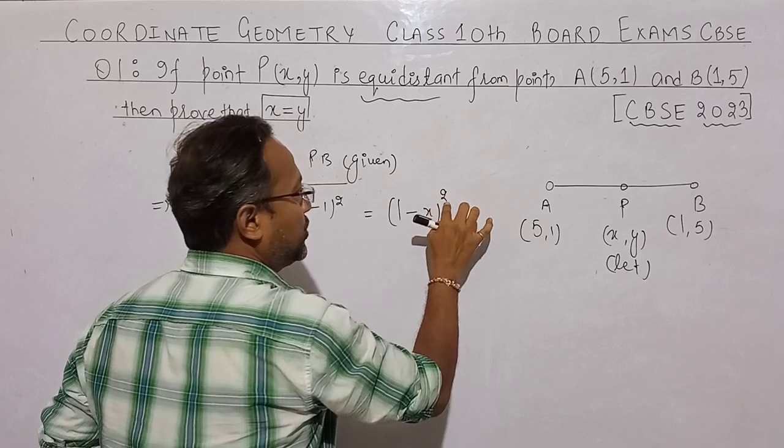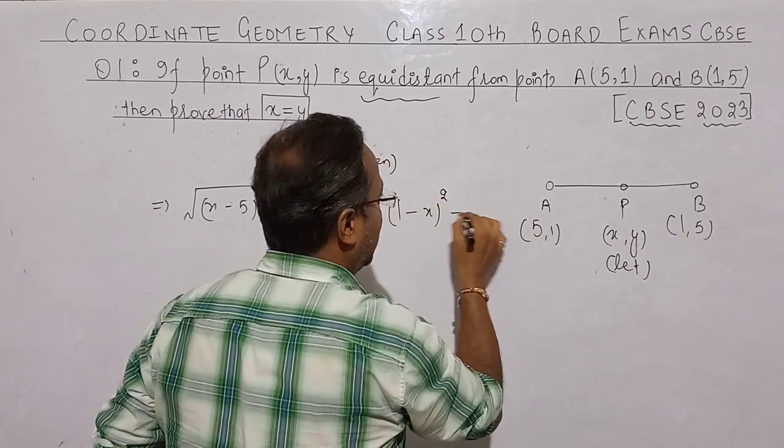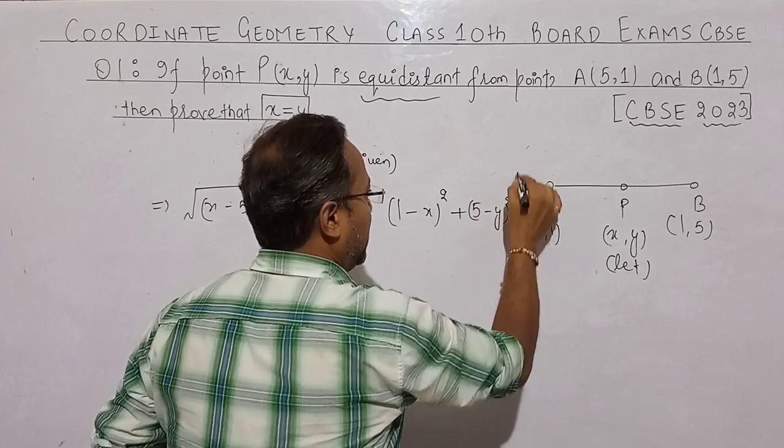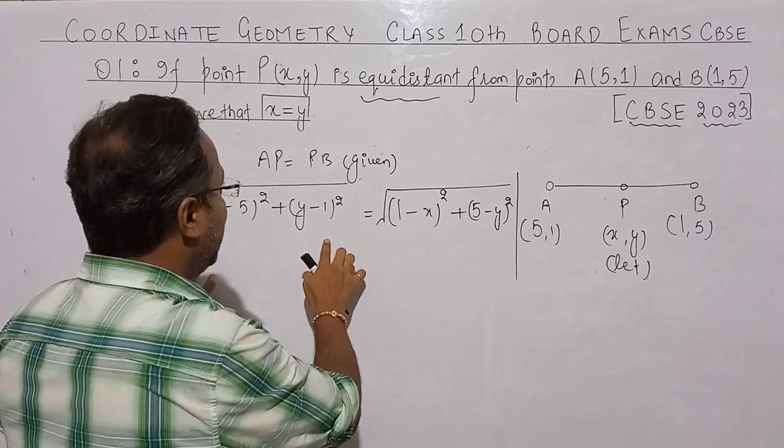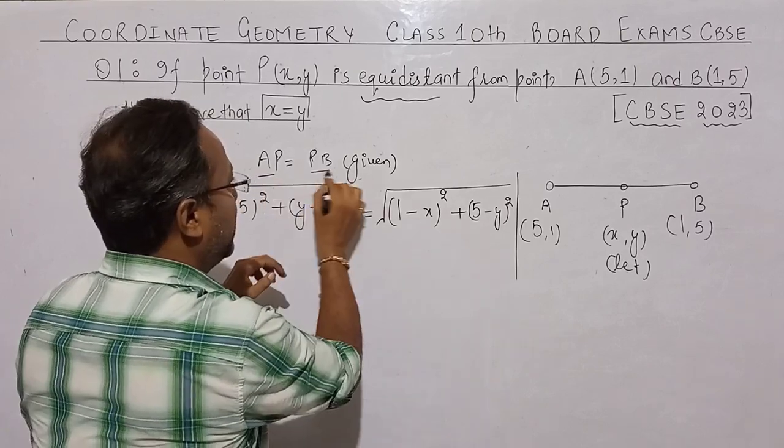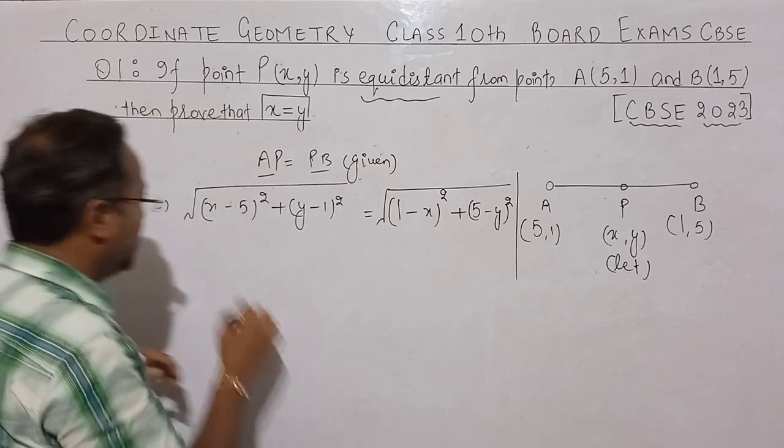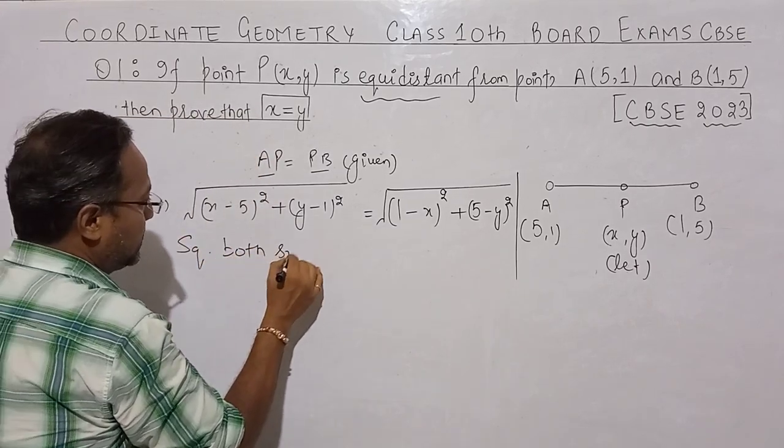Here will be plus (5 minus y) whole square. Because this square is also negative, it will become positive. Now we have square root. What is the value of AP? What is the value of BP? What we do is squaring both sides.